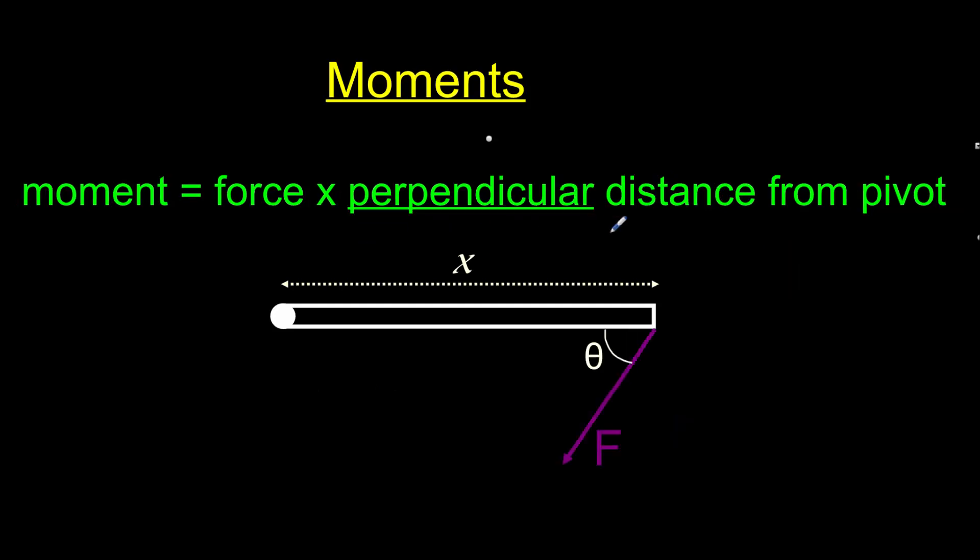It's worth stressing that the word perpendicular must be included in your definition of the moment, and it is a very important point. You'll see in this diagram here that the force is not acting at 90 degrees to the beam. There are two methods we can use to solve this. The first is to work out what the perpendicular distance from the pivot is. This line shows the perpendicular distance, you can see the right angle down here, between the pivot and the line of action of the force. So if we were to work out the length of this line, we could use that instead of X as our distance.